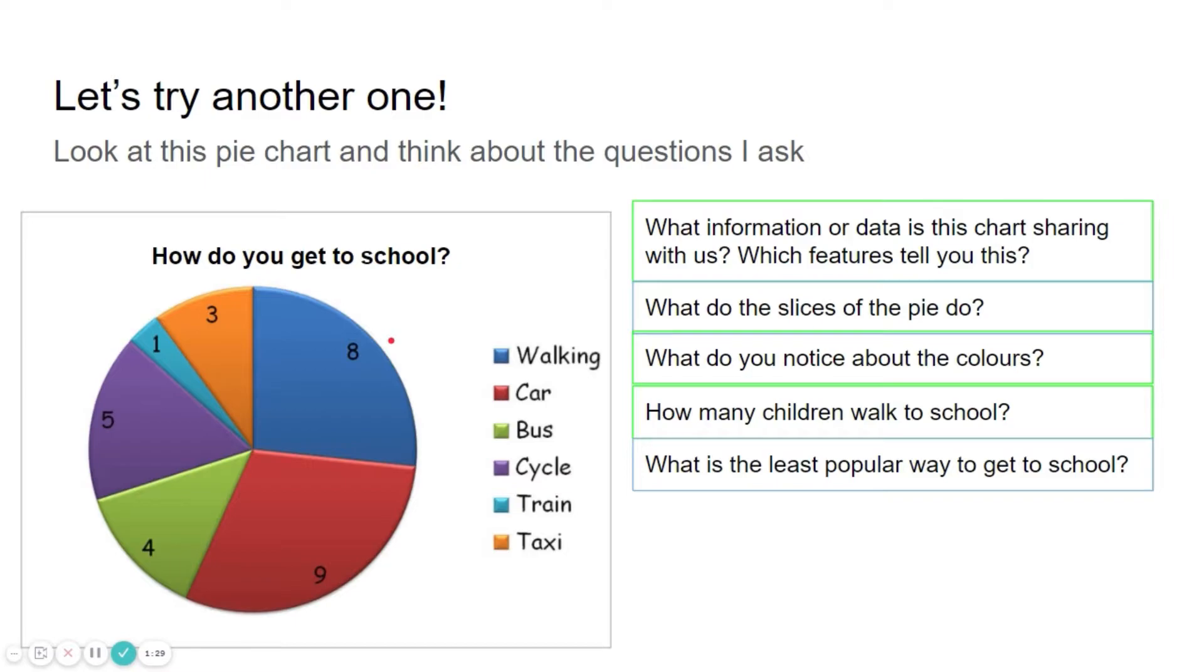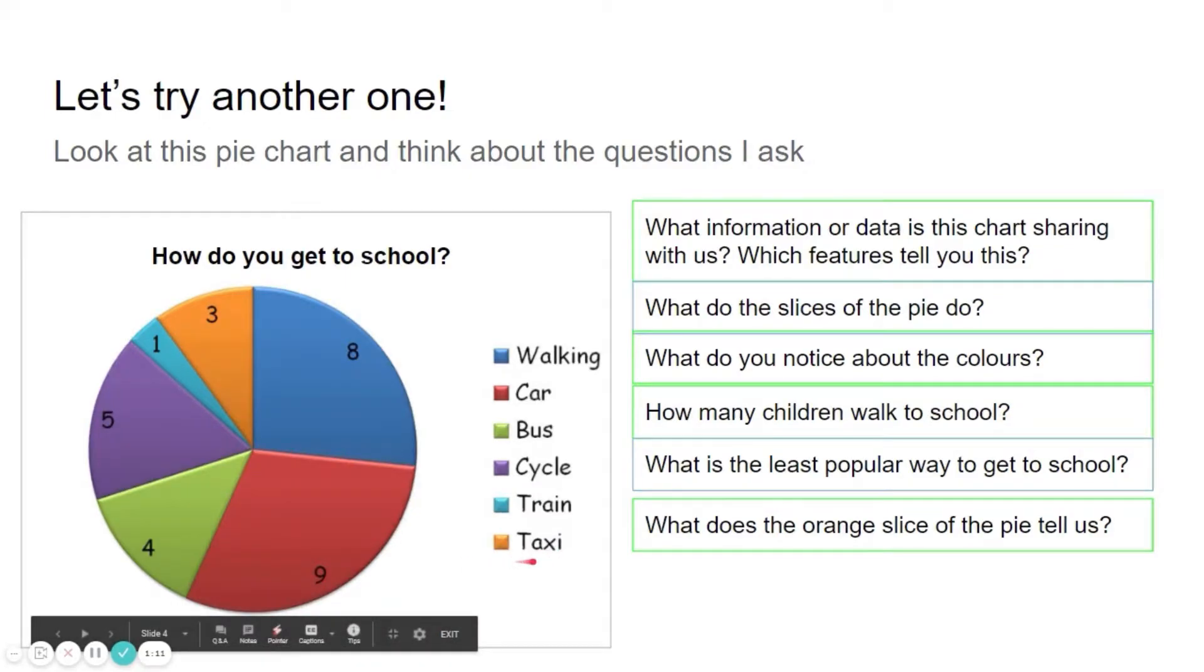What is the least popular way to get to school? Well, look for the smallest slice here. The smallest slice is the one. So one looking at light blue. Light blue means train. So the least popular way to get to school is the train. What does the orange slice of the pie tell us? Well, it tells us that it's orange. So we look at the orange and it meets up with taxi. So three children chose taxi as their way to get to school.